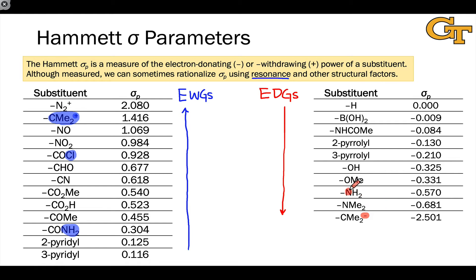We can rationalize some of these differences in sigma p values using structural factors. For example, it makes sense that an amino group is going to be more donating than a hydroxyl group because nitrogen is less electronegative than oxygen and is a better, stronger electron donor. You can also use resonance differences to rationalize, for example, the difference between a 2-pyridyl and a 3-pyridyl group, and the difference between 2-pyridyl and 3-pyridyl on the electron withdrawing side.